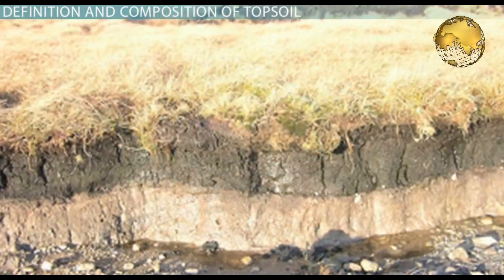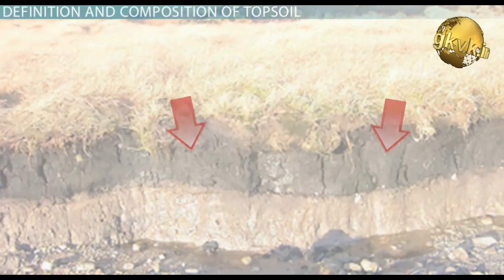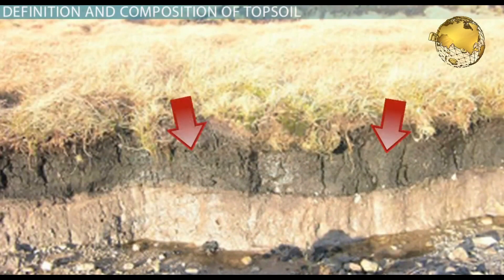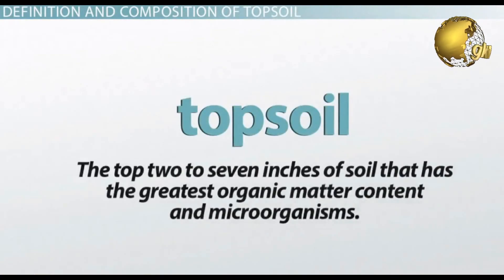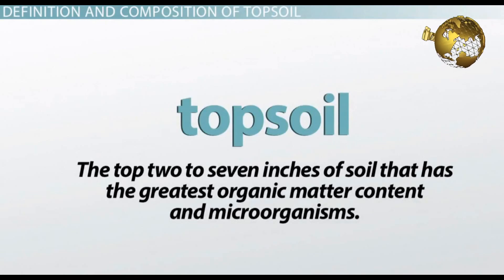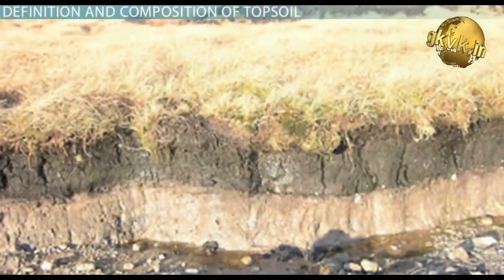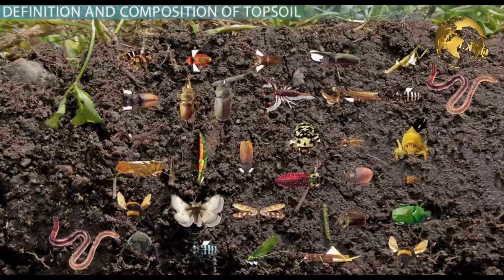Take a closer look at the image on the screen and notice the dark layer of topsoil where the plants root themselves. Topsoil is defined as the top 2 to 7 inches of soil that has the greatest organic matter content and microorganisms. Organic matter is what is left after plant roots, stems, and leaves decompose.